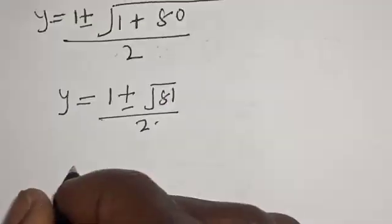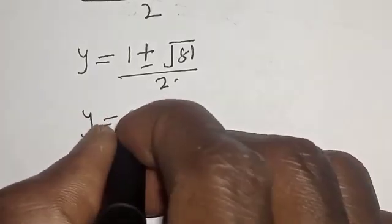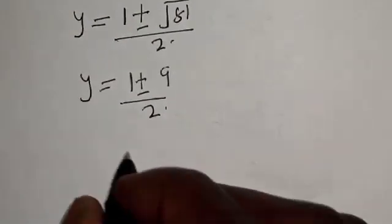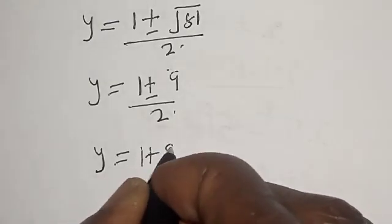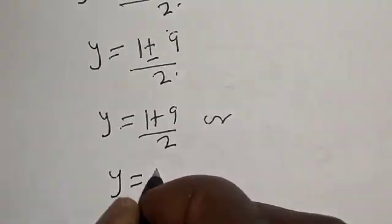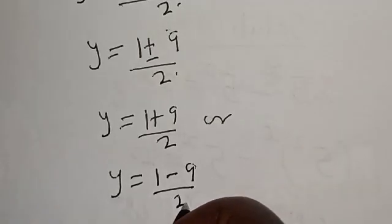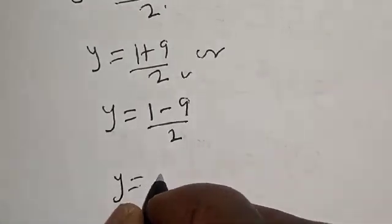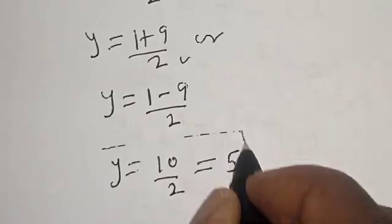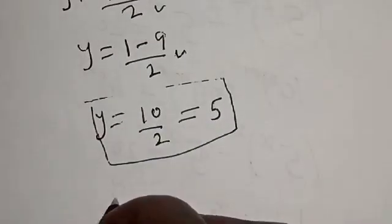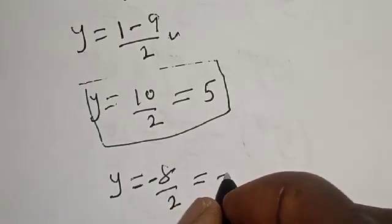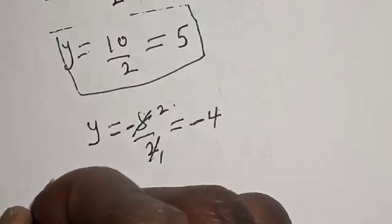y equals 1 plus or minus 9, over 2. Taking the positive case: y equals 1 plus 9 over 2, which equals 10 over 2, which equals 5. Taking the negative case: y equals 1 minus 9 over 2, which equals negative 8 over 2, which equals negative 4. Therefore y equals 5 or y equals negative 4.